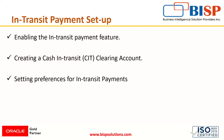The cash in-transit clearing account is a clearing account created to hold amounts that are to be paid but have not yet been received by the vendor's bank. This account holds the amount temporarily until it is received by the vendor's bank. The CIT clearing account must be of the 'Other Current Liability' account type and can be used for journals and in-transit payment accounts only.